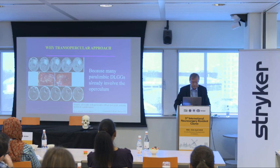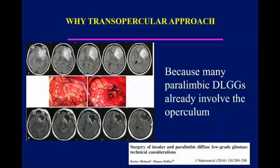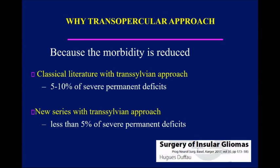Why the transopercular approach? Because most of the time this tumor is also involving the operculum. So you imagine — I will open the Sylvian fissure in order to remove the insula, and finally at the end, I will remove the operculum anyway. Maybe if you remove the operculum from the beginning, it will be easier. Because the morbidity is reduced: five to ten percent of severe permanent deficits by the best surgeons in the literature, less than one percent in my experience.